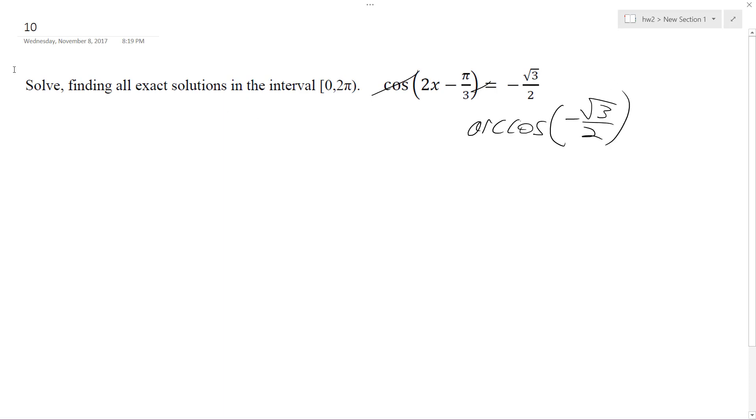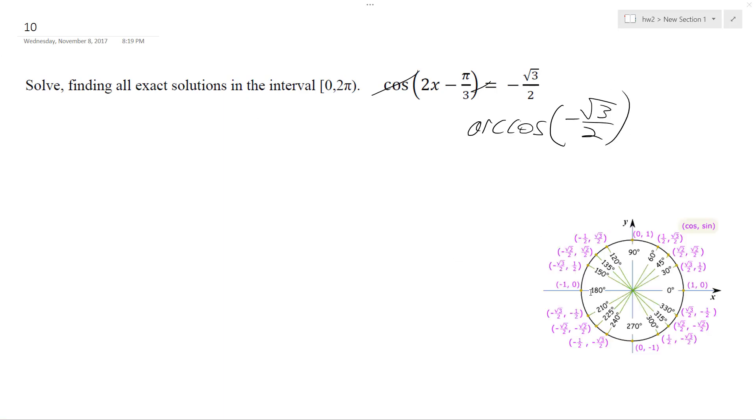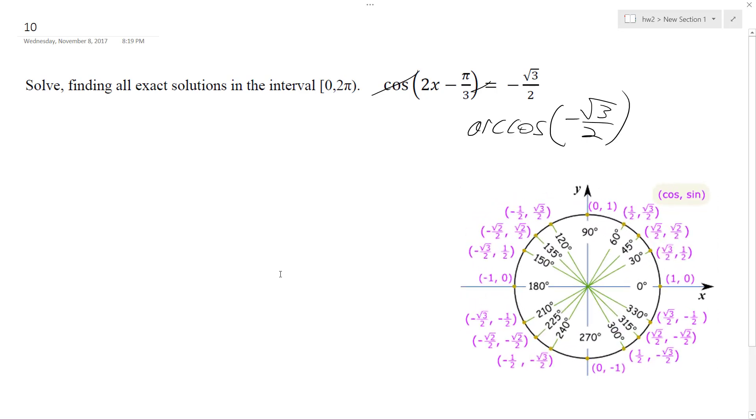And we're bound by, let me get my unit circle here, we're bound by 0 to π with arc cosine. So negative root 3 over 2, that's 5π over 6.